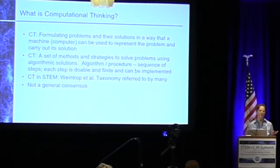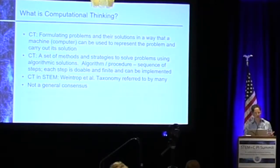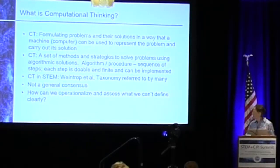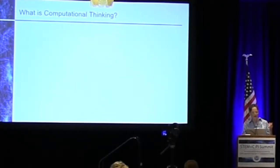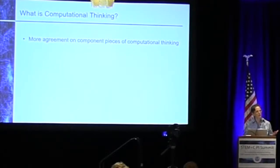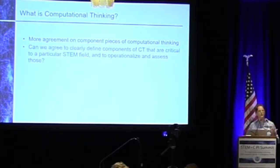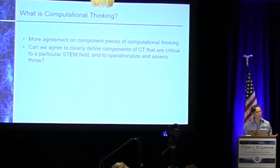But it didn't seem like there was a general consensus. One question that kept coming up was: how can we operationalize and assess what we can't define clearly? It seemed there was more agreement on the component pieces of computational thinking than on the big umbrella. So I wonder if we can agree to clearly define components of CT that are critical to a particular STEM field, and then operationalize and assess those.